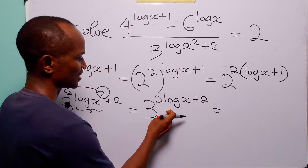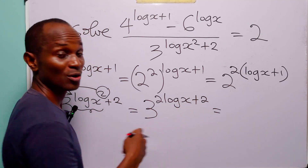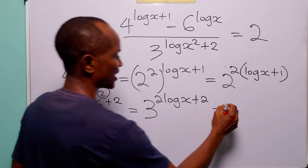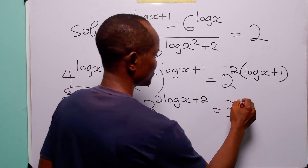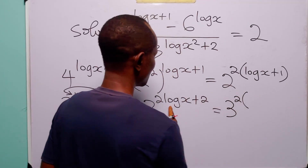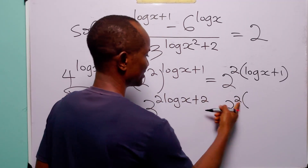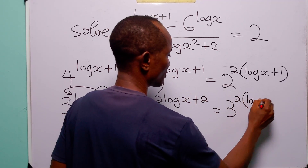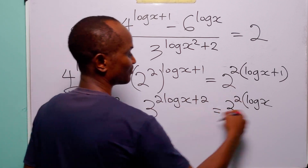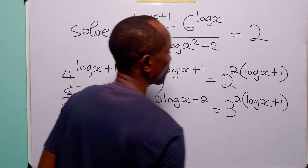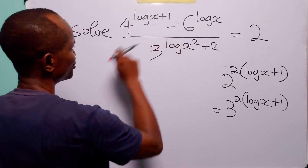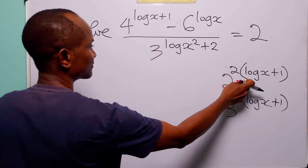You can see that between these two exponents we have a common factor of 2, so we can factorize. We get 3 to the power 2 times: 2 log x divided by 2 is log x, and plus 2 divided by 2 is plus 1. So now we rewrite the original equation.